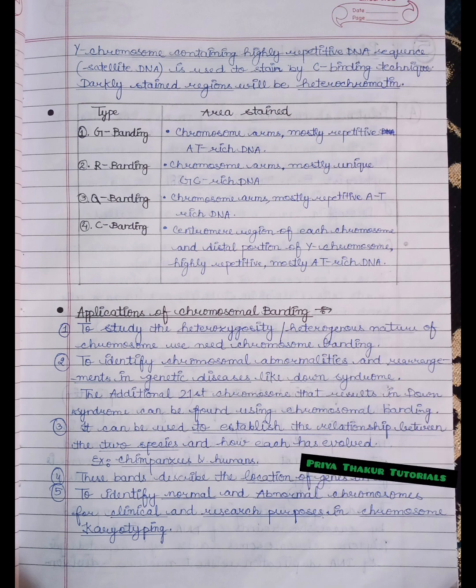The fourth application is these bands describe the location of genes on a chromosome. The fifth application is to identify normal and abnormal chromosomes for clinical and research purposes in chromosome karyotyping.